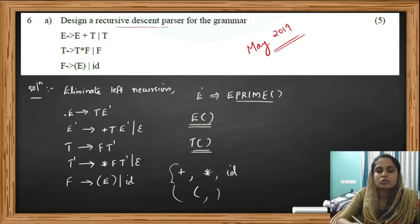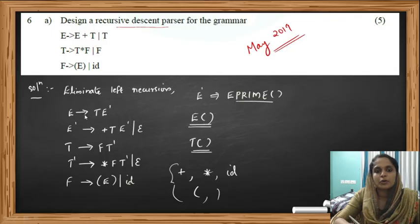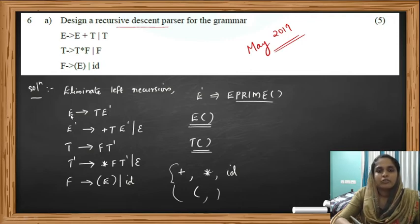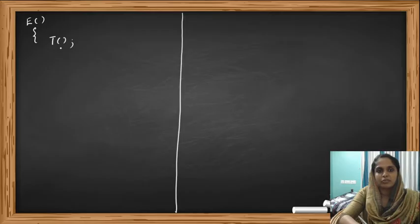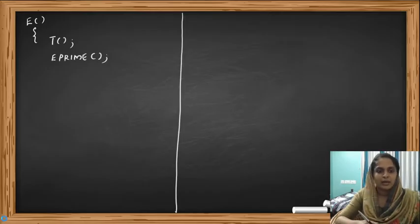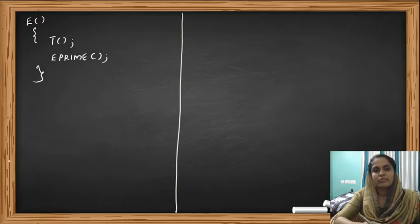First we have to call the procedure for E, because E is our starting symbol. In the production E → TE', we first call the procedure for T, then call the procedure for E prime. That's the only thing we have to do for symbol E, so we can close the procedure for E.